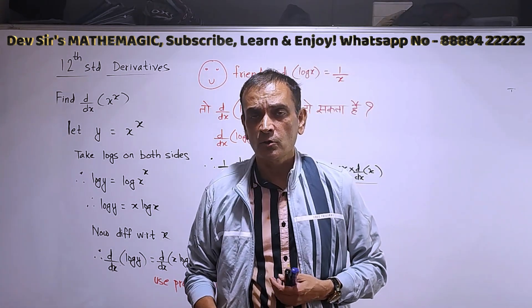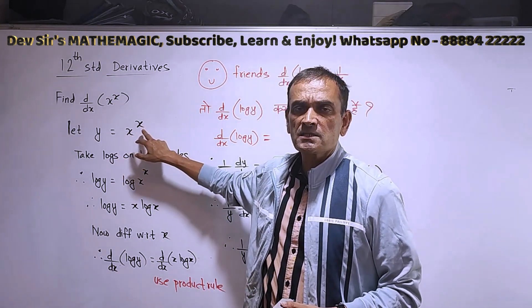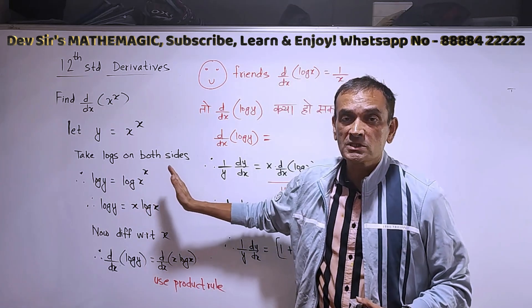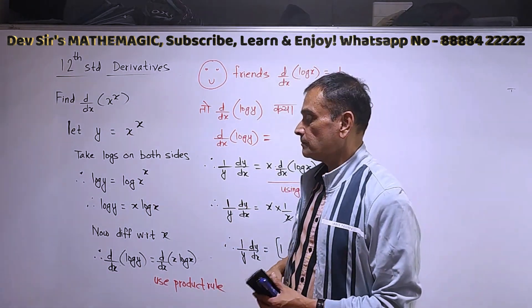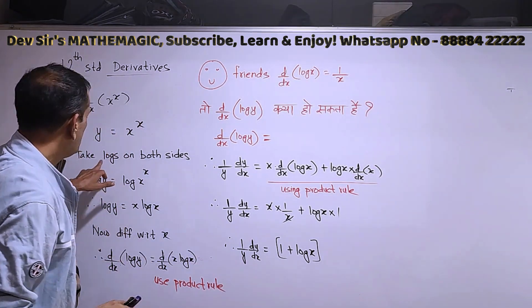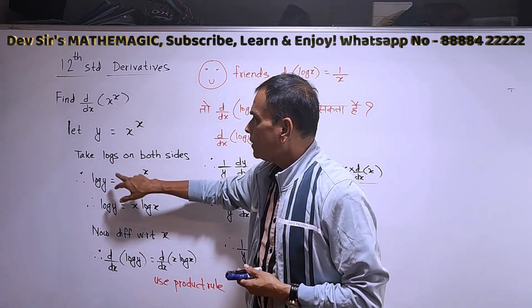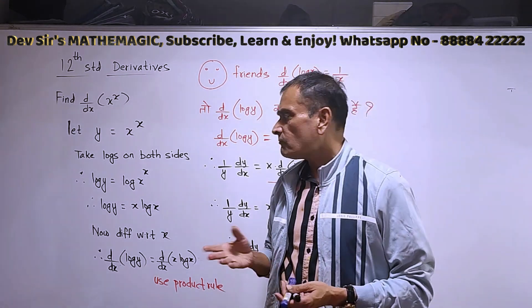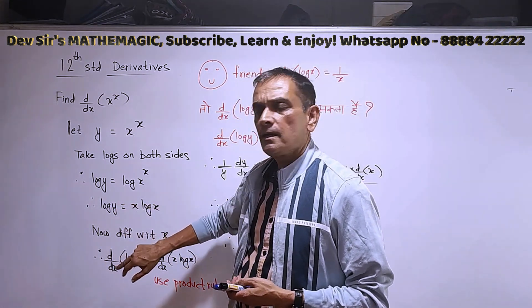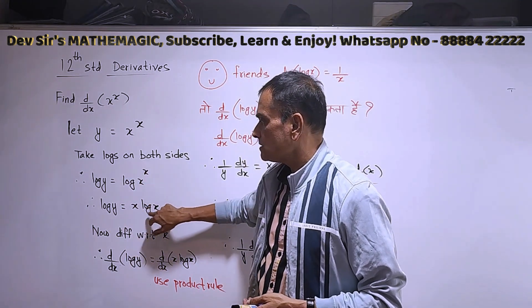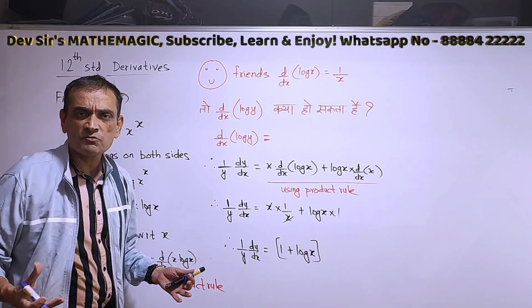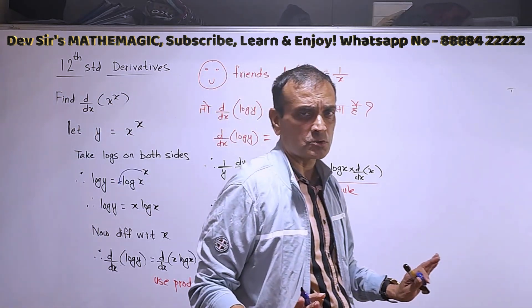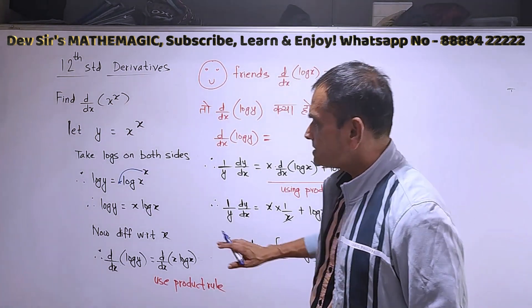This is a different type that we are doing today. Whenever we get y equal to x raised to x, or x raised to sin x, or tan x raised to x, you have to take logs on both sides. Taking logs on both sides, what do we get? Log of y is equal to log of x raised to x. After that, using rules of logarithm, x comes in front: log y equals x log x. We have not differentiated yet — just taking logs on both sides, we get this.